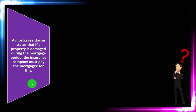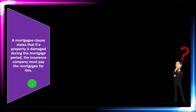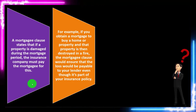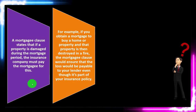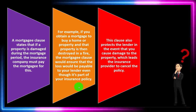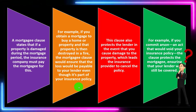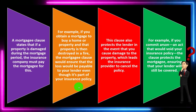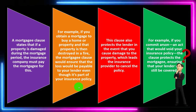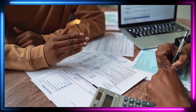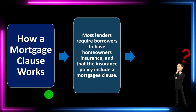A mortgagee clause states that if a property is damaged during the mortgage period, the insurance company must pay the mortgagee for this. For example, if you obtain a mortgage to buy a home and that property is then destroyed in a fire, the mortgagee clause would ensure that the loss would be payable to your lender, even though it's part of your insurance policy. This clause also protects the lender in the event that you cause damage to the property — for example, if you commit arson, an act that would void your insurance policy, the clause protects the mortgagee, ensuring that your lender will still be covered.